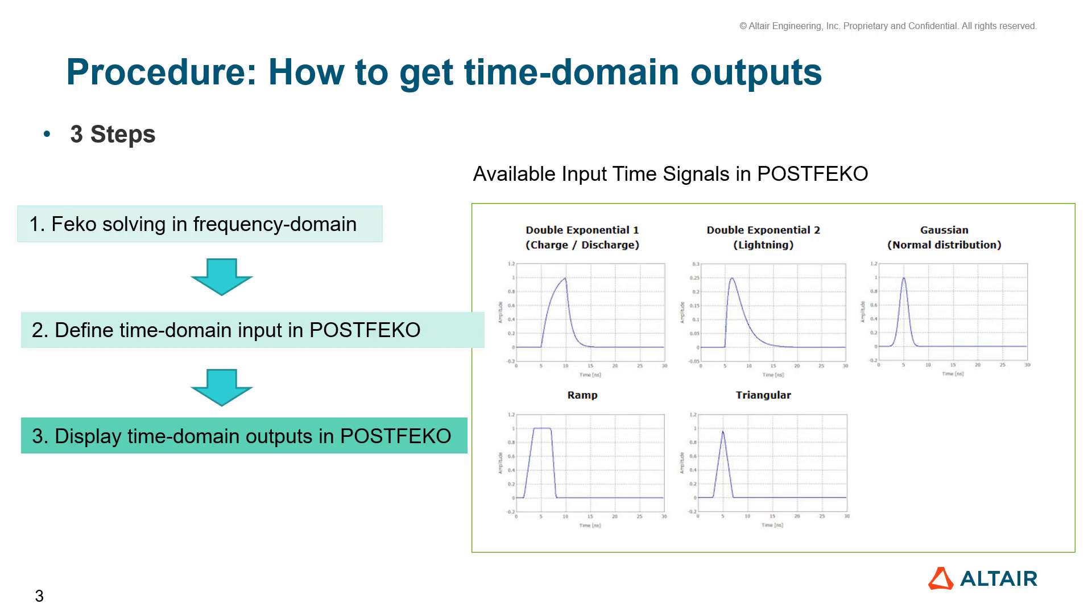The third step is to display time domain output in POSTFEKO. These are the available input time signals in POSTFEKO. The double exponential one is used for charging and discharging. The double exponential two is used for lightning signal. And you can use Gaussian pulse, ramp pulse, and triangular signal.